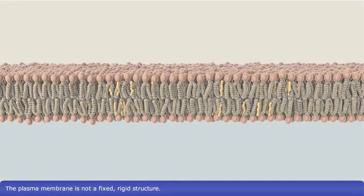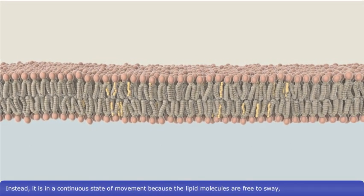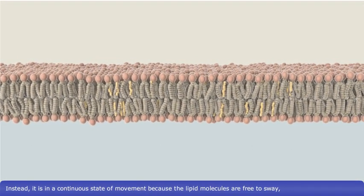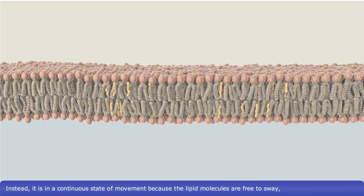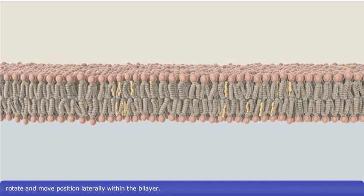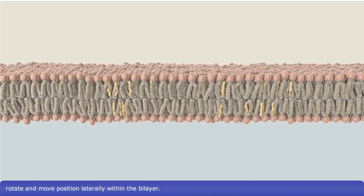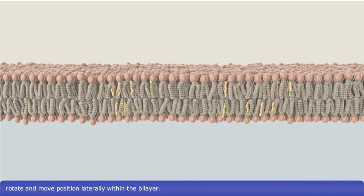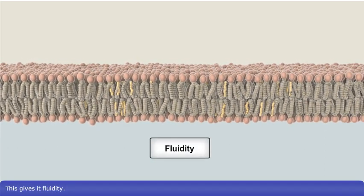The plasma membrane is not a fixed rigid structure. Instead, it is in a continuous state of movement because the lipid molecules are free to sway, rotate, and move position laterally within the bilayer. This gives it fluidity.